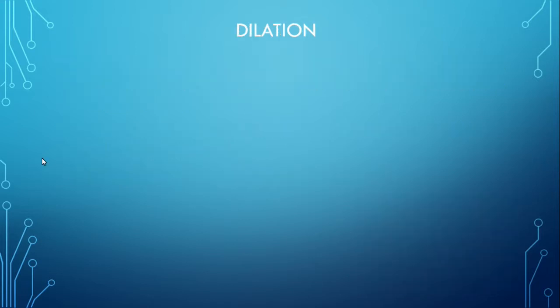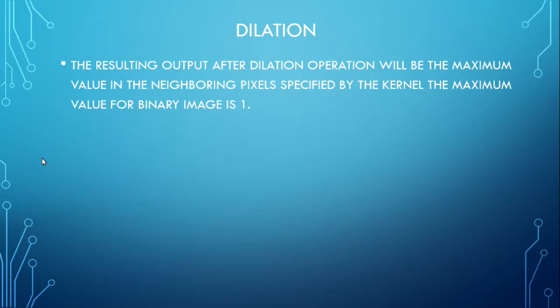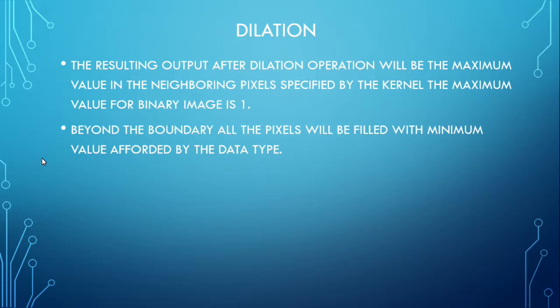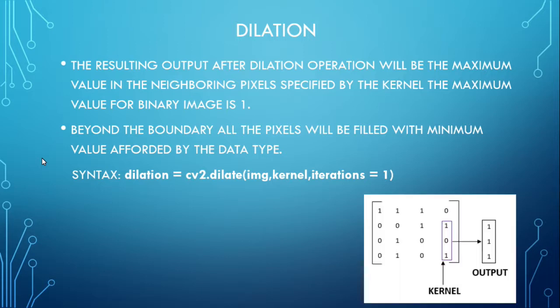Now let us focus on dilation. The resulting output after dilation operation will be the maximum value in the neighboring pixels specified by the kernel. The maximum value for binary image is 1. Beyond the boundary, all pixels will be filled with minimum value afforded by the data type. The syntax for dilation is: dilation = cv2.dilate(img, kernel, iterations=1), where kernel refers to the size which the boundary has to be taken, and img is the image from the user. As we can see here, output is 1, 1, 1 because of the neighboring pixel values of the binary image.